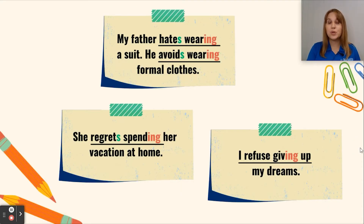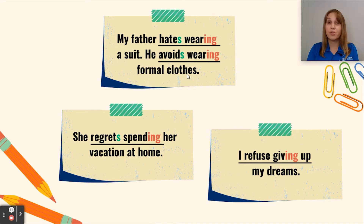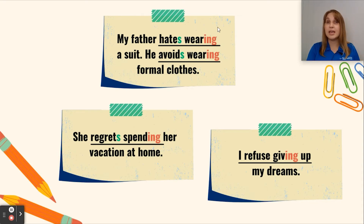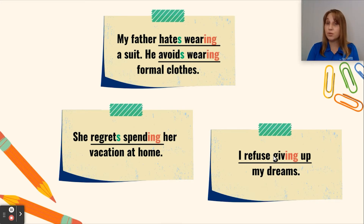Let's look at how we use the gerund in practical everyday format. 'My father hates wearing a suit — he avoids wearing formal clothes.' We have 'hates wearing' and 'avoids wearing.' 'She regrets spending her vacation at home' — regrets spending. 'I refuse giving up my dreams' — refuse giving up.